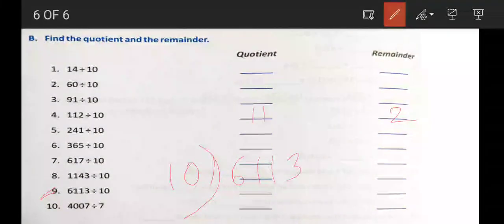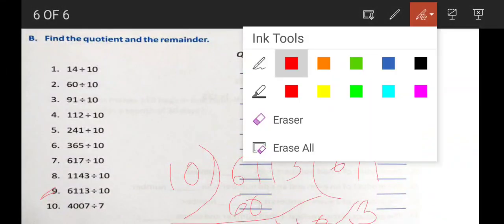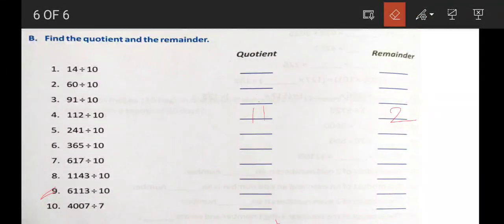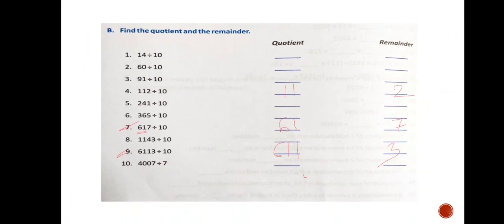We have to divide by 10. For 613 divided by 10, the quotient is 61 and 3 is the remainder. For 617, the quotient is 61 and 7 is the remainder. Practice this way.